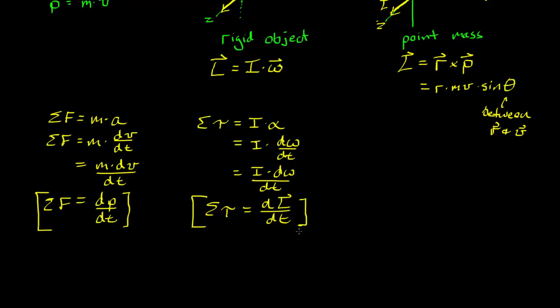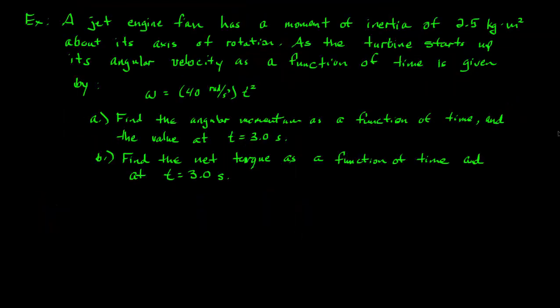Let's do one example then give the practice set — it's basically just knowing these equations. We're looking at a jet engine fan given the moment of inertia about its axis of rotation. It's starting up and spinning — we'll say in the XY plane so the angular momentum points out of the screen.